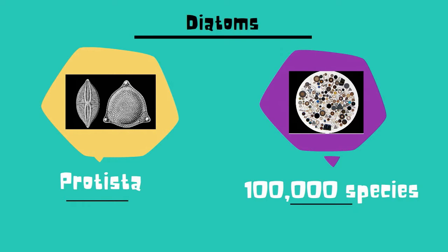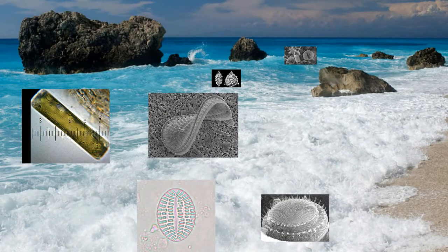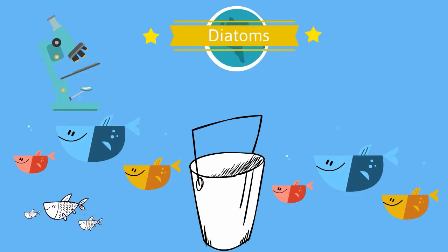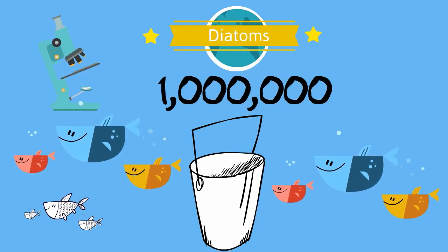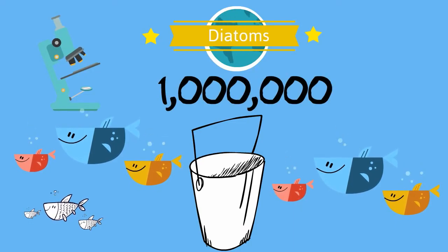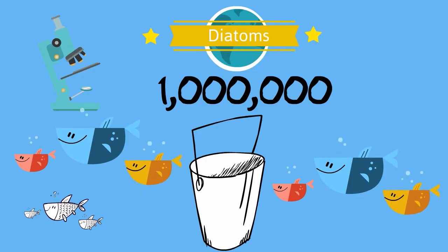Diatoms exist in large numbers in most bodies of water throughout the world. In fact, just one quart of seawater may contain over a million diatoms. They are primary producers and also a very large food source in the ocean.